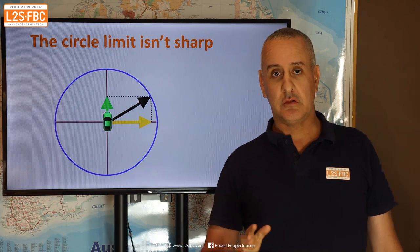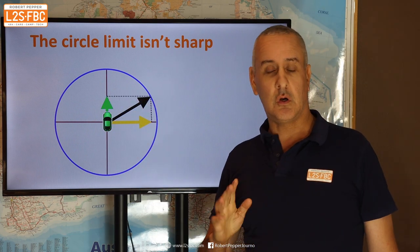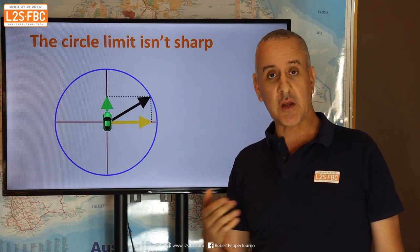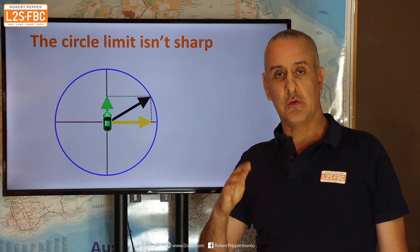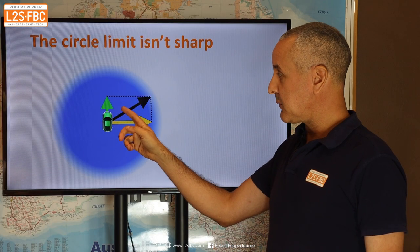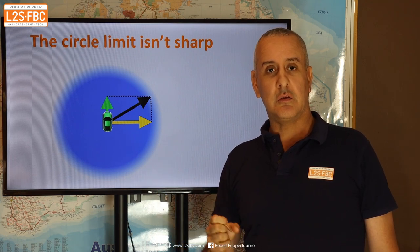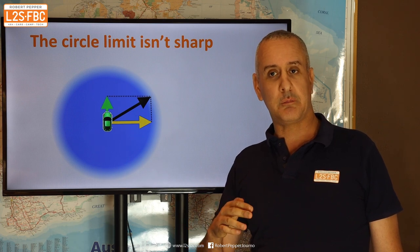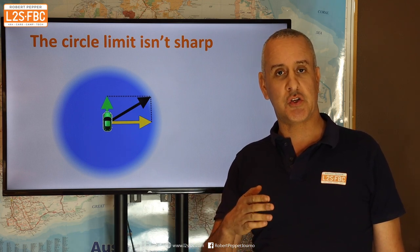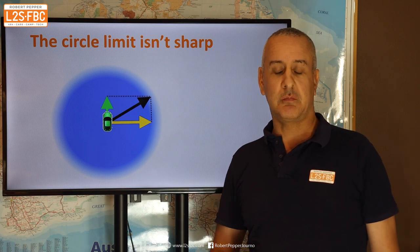There are a couple of simplifications I've made that I'll now address. I've talked about the grip limit as being sharp, but it's not. It's not the case that you just have grip and then instantly there's no grip. Generally there is a transition period from more grip to less grip. That transition — how gradually a tyre goes from gripping to not gripping — is an indication of how forgiving the car is. If you can feel, hear, and sense the car sliding, you can bring it back within the traction circle. A really sudden transition from grip to no grip makes a car very hard to drive and unforgiving.